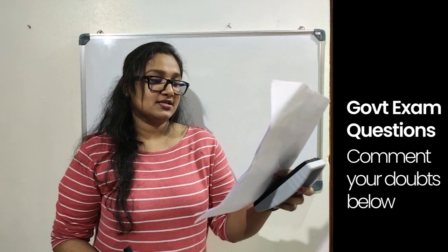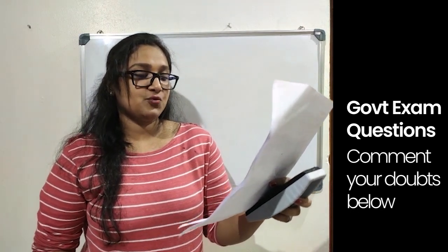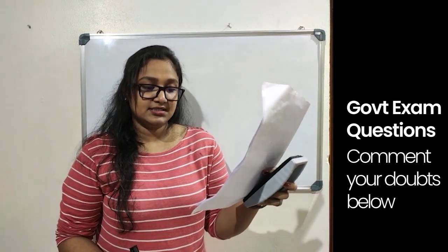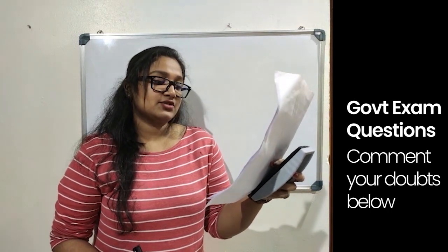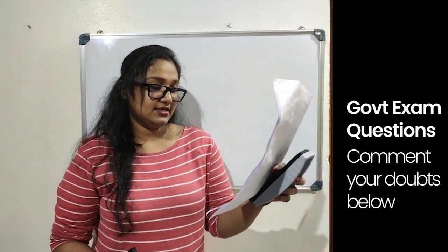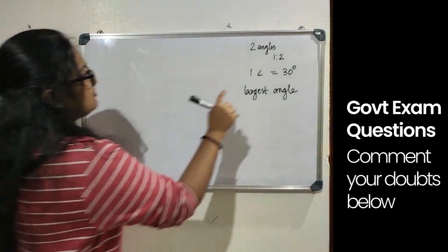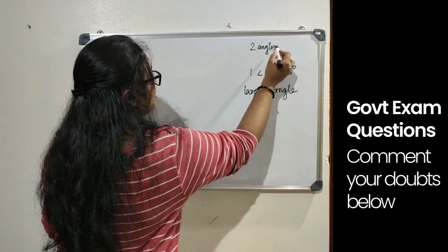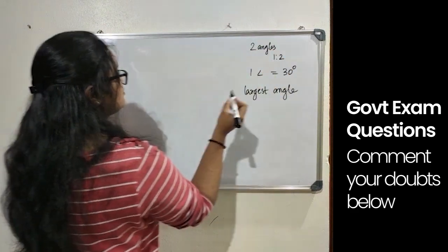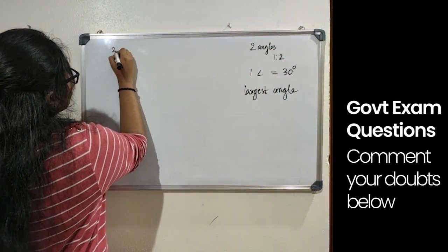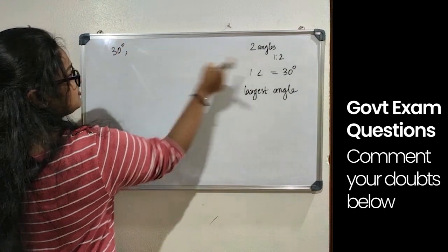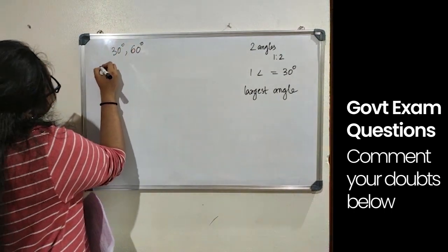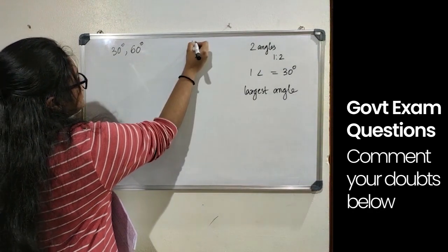A triangle has two of its angle in the ratio 1 is to 2. If the measure of one of its angle is 30 degree, what is the measure of the largest angle of the triangle in degrees? Considering one angle be 30 degree, then we know that two angles are in the ratio 1 is to 2. If one angle is 30 degree, the next can be 60 degree.